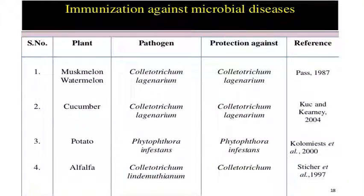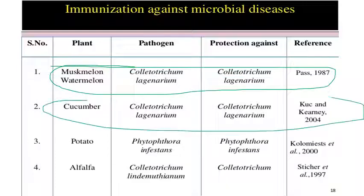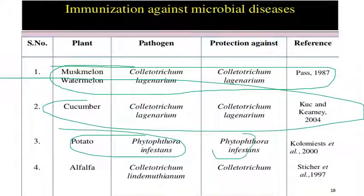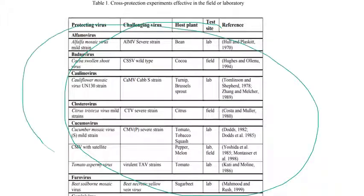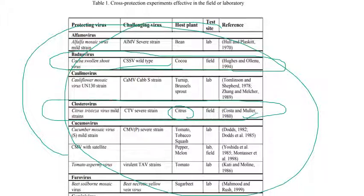Cross protection is also applied to immunization against microbial agents such as Phytophthora infestans. Commercially, cross protection has been employed against various viruses across different host crops, with scientists such as Costard and Molar working on coconut swollen shoot virus in cocoa and citrus tristeza virus in citrus.